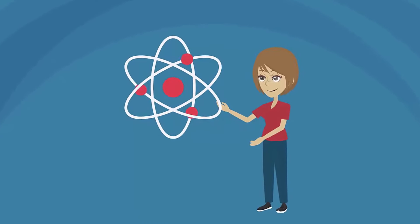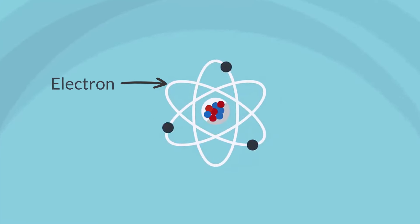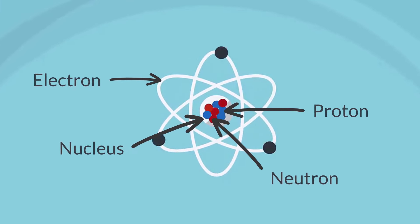However, we now know that atoms are composed of even smaller particles. Each atom comprises electrons orbiting a very small, dense nucleus made up of protons and neutrons.